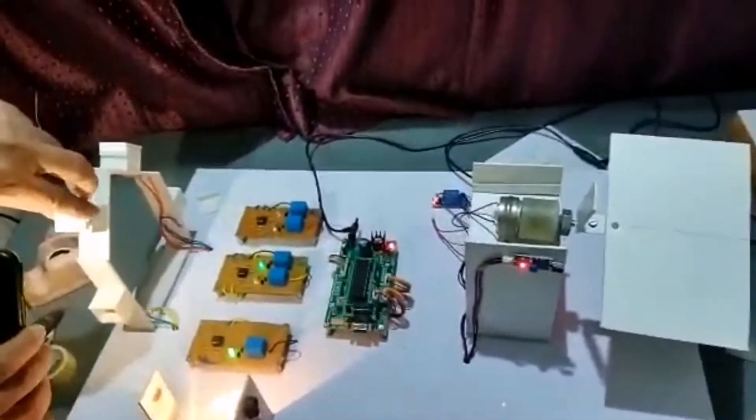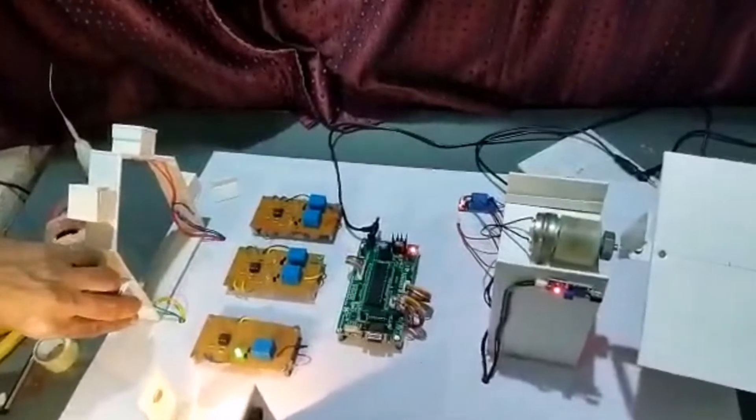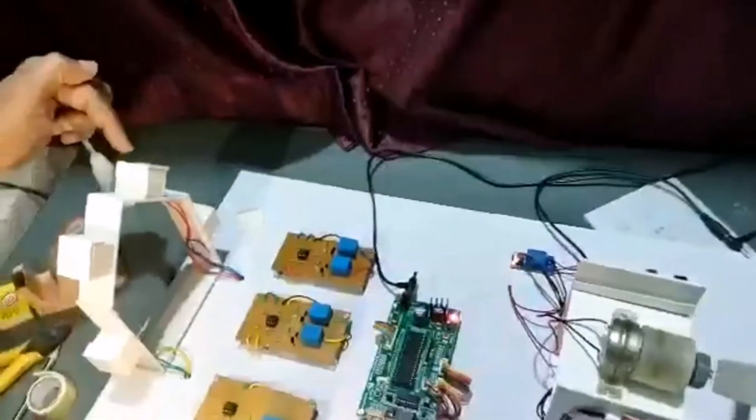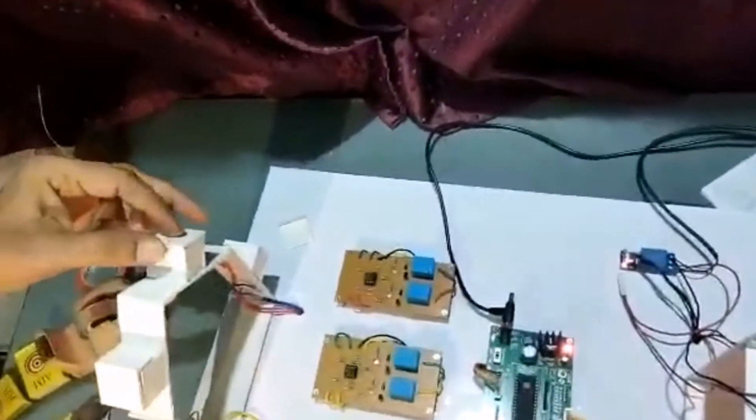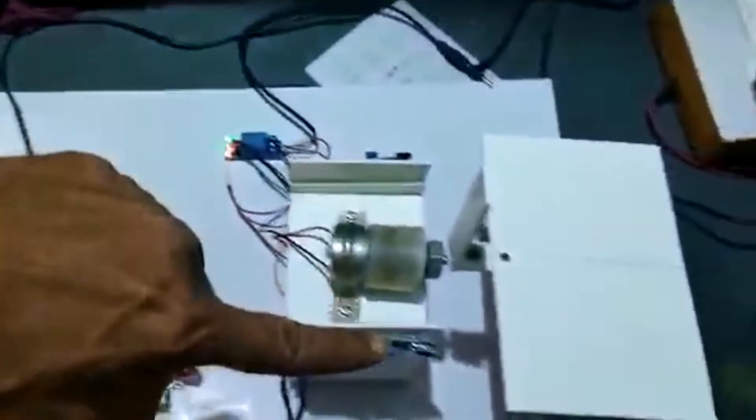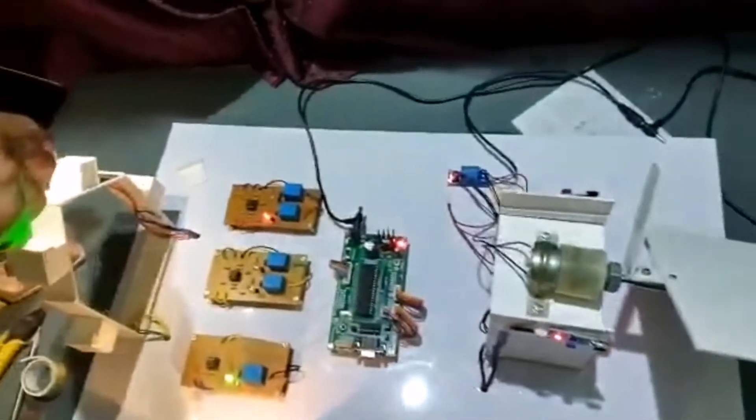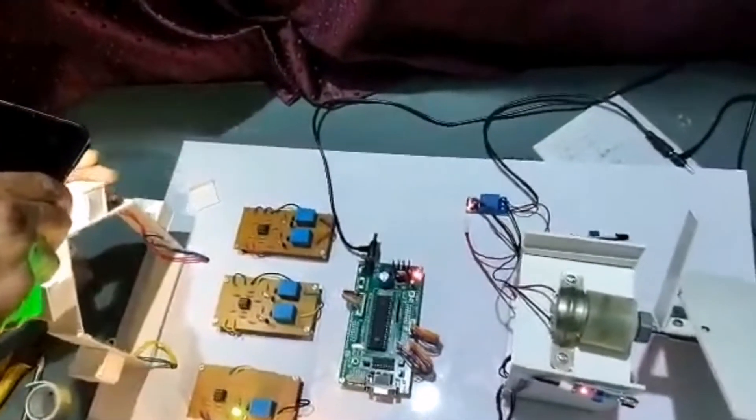And I will close this one. Next, this is the afternoon sensing sensor. So now the solar panel is rotated by one more 30 degrees. Then I will close this one.